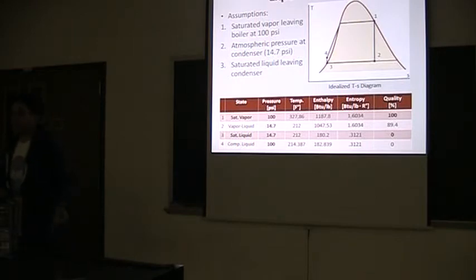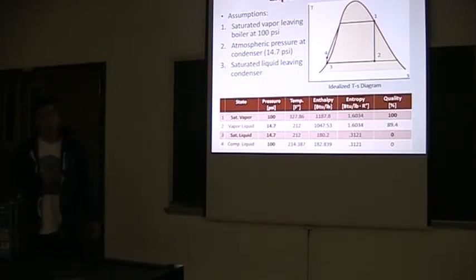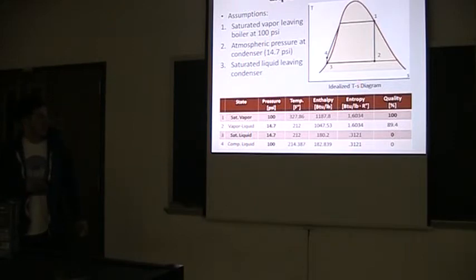I calculated the expected results with the assumptions given in the lab manual. The first assumption was that we have saturated vapor leaving the boiler. That corresponds with this point here. So saturated vapor leaves the boiler, expands isentropically with no change in entropy. And we have atmospheric pressure at both sides of the condenser. We have saturated liquid leaving the pump.